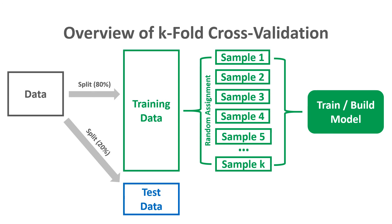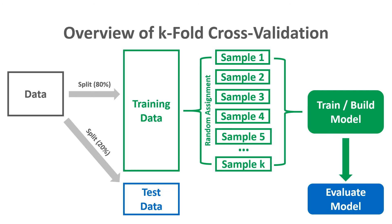From the k-fold cross-validation process, we train and build our models — for example, applying ordinary least squares linear regression. We then evaluate that model using the test data, assessing prediction accuracy based on data that was not used to develop or validate the model. By holding out this test data, we get a purer, better estimate of how well our model actually performs.